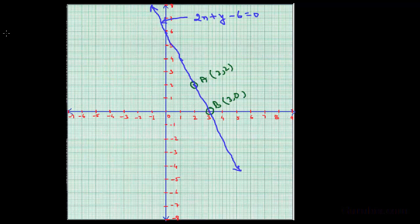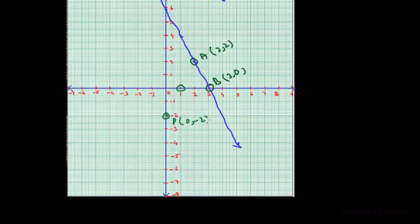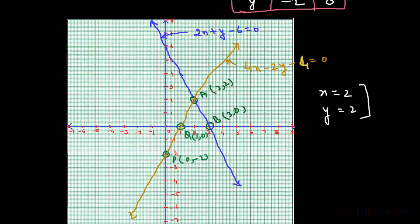Now we plot the points from the second table: P is (0, −2) and Q is (1, 0). We draw a straight line through these points, representing 4x − 2y − 4 = 0. We observe that the two straight lines meet at x = 2 and y = 2. Therefore, the solution of the given pair of equations is x = 2, y = 2.